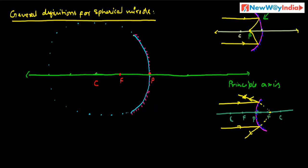Next is focal length. The linear distance between the pole and the principal focus is called the focal length.